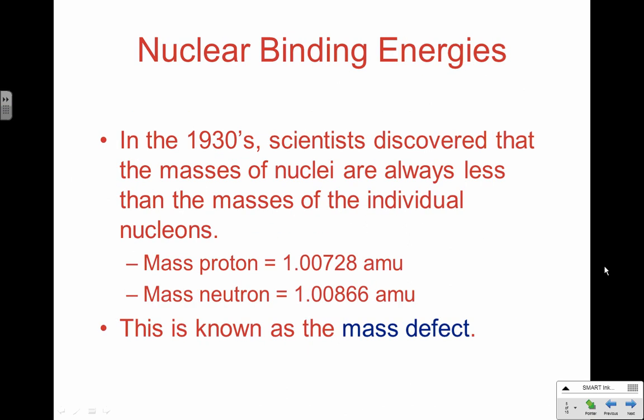There's a ton of energy to be harnessed in nuclear reactions. In the 1930s, chemists discovered that the masses of nuclei are always less than the masses of the individual nucleons. When you add up the masses of the protons and neutrons present, you get a bigger number than the nucleus ever actually weighs — this is known as the mass defect or mass deficit. This makes sense because protons are all positively charged and crammed together in a very tight space, requiring tremendous energy to hold the nucleus together via the strong nuclear force. That missing mass has been converted to the energy holding the nucleus together.